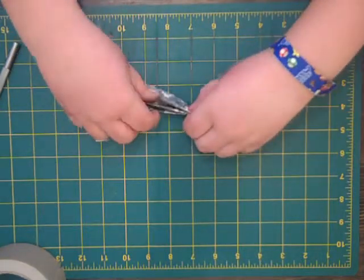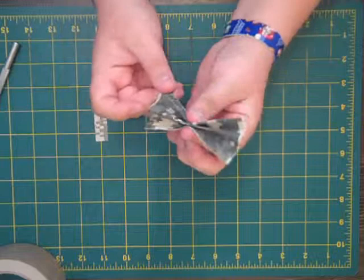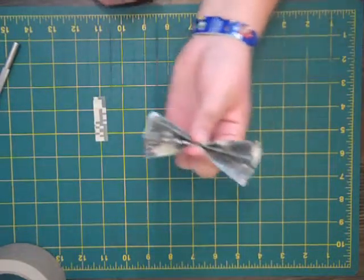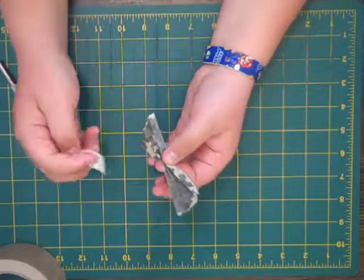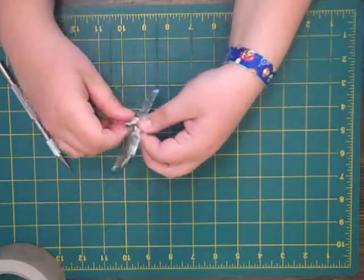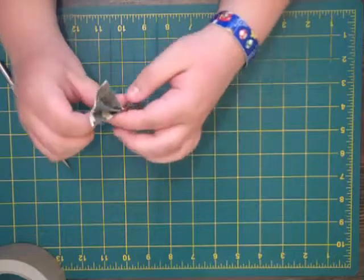So then you should have something that looks like this, and then your last thing to do is just to go ahead, take your last little strip, go ahead and seal off your bow, and then bam, you are done, you have your hair bow.